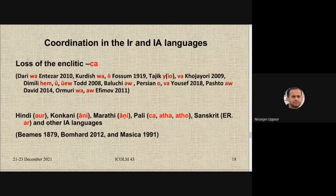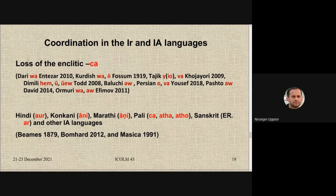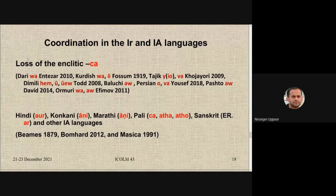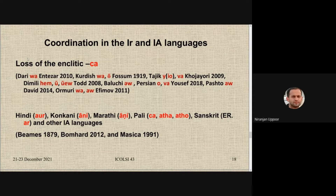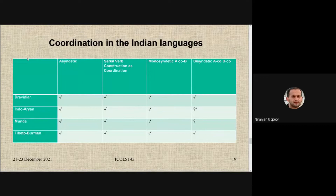When we come to the New Indo-Aryan and Iranian languages, we find that *cha* is not attested. Among the Iranian languages — Dari, Kurdish, Tajik, Dimili, Baluchi, Persian, Pashto, Ormuri — there are apparently no reports of *cha*. Likewise, in the modern Indo-Aryan languages the enclitic *cha* is lost. Bloch states that the modern Indo-Aryan languages lost the enclitic *cha* and developed a heavier coordinator.